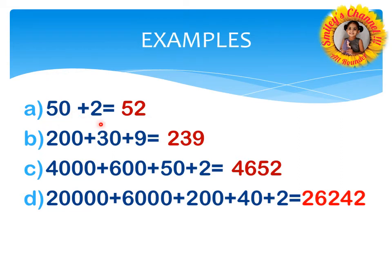Look here: 50 plus 2. Did you remember the first point? When you are writing a short form, you need to choose the leftmost initial digit. In 50, the leftmost initial digit is 5, so we write 5. Then we have only a single digit, so we directly write 2. So 50 plus 2 equals 52. If you have 60 plus 2, it is 62. If you have 70 plus 4, it is 74.